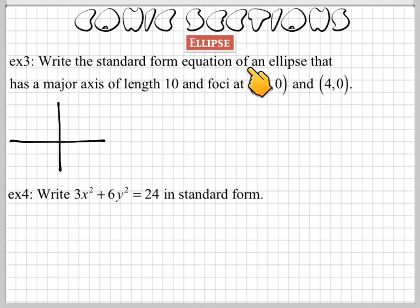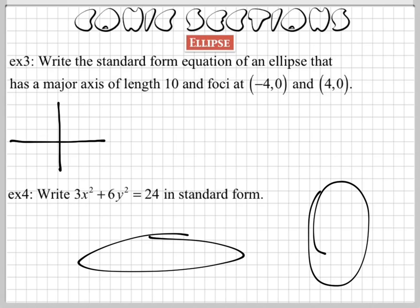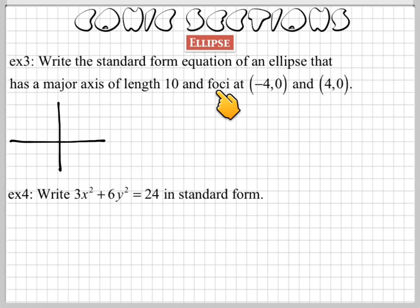This says write in standard form an equation of an ellipse that has a major axis of length 10. The major axis is the one that goes the long ways, it's the biggest axis of the ellipse. That doesn't tell me anything about its graph. I go over to the foci. That tells me something about its graph. I can graph points like that.